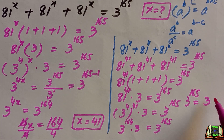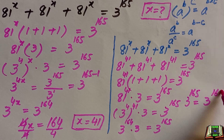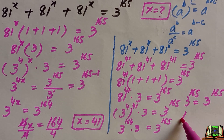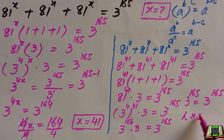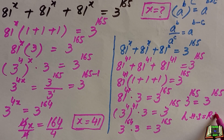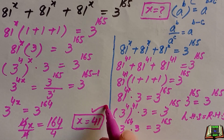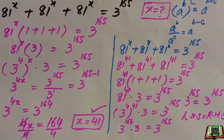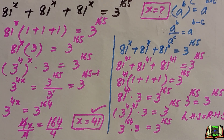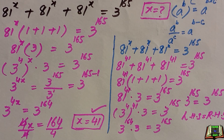Using the product rule of exponents, 3 raised to power 164 times 3 equals 3 raised to power 164 plus 1, which is 3 raised to power 165. This equals 3 raised to power 165, so the left-hand side equals the right-hand side. Therefore x equals 41 is the correct answer. I hope all steps are clear — if you have any queries, write in the comment box. Don't forget to hit the like button. Thanks for watching.